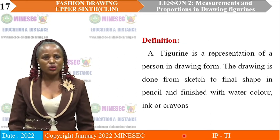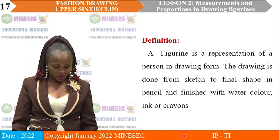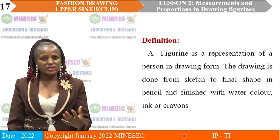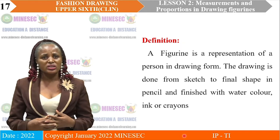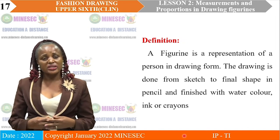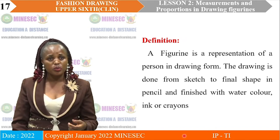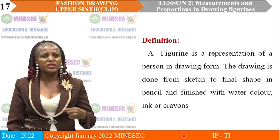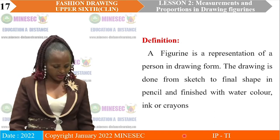A figurine is a representation of a person in drawing form. When you draw your figurine and finish it, you look at it and it really looks like somebody. A figurine represents somebody. For instance, if you are dressing a figurine with a party wear or a wedding gown — a lady dressed in a wedding gown — you will see that if you draw well, it really looks like somebody. So when you are drawing, you have to take care of all those things.